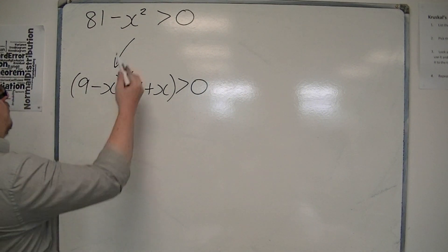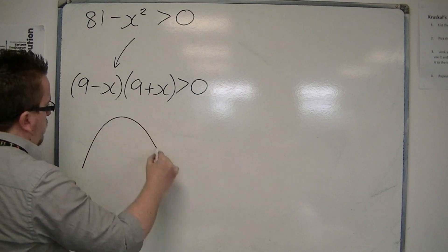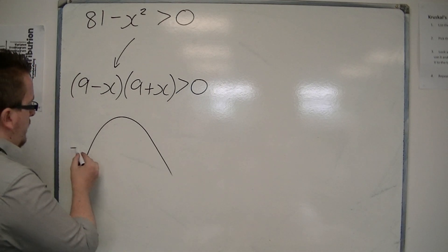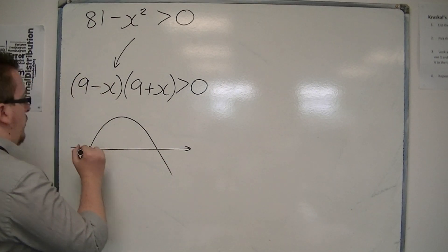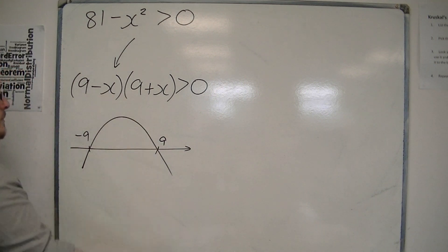Now, in drawing this, it's a negative x squared, so we're now dealing with a problem that looks like that, rather than the other way up. It has two solutions, one at minus 9 and one at 9, coming from those two brackets.